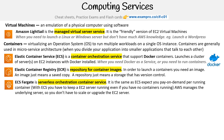We have ECS Fargate, or just Fargate. It is a serverless orchestration container service — it's the same as ECS except you pay on demand per running container. With ECS, you have to keep an EC2 server running even if you have no containers running. Fargate manages the underlying server, so you don't have to scale or upgrade the EC2 server. That's the advantage over ECS.